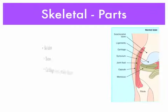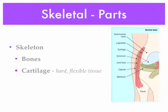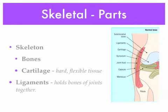Now let's go through some parts. The skeletal system starts with the skeleton, which is made up of bones and cartilage. Cartilage is a hard yet flexible tissue usually placed between bones. Ligaments are also tissue, and they hold the bones of joints together — you can see the long strands of ligaments holding the two bones of the knee joint together.